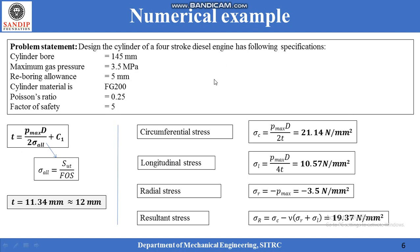Let us solve a numerical example to understand this concept. Design the cylinder of a four-stroke diesel engine with the following specifications — you may pause the video to go through the given data. The thickness can be calculated by the formula already discussed. Allowable stress is calculated as ultimate tensile strength divided by factor of safety. By substituting all the known values, thickness equals 11.34 mm, which is rounded off to 12 mm. Although the design thickness is obtained, it is important to calculate all stress values. Circumferential, longitudinal, radial, and resultant stresses are calculated and it is ensured that all these values are less than the allowable stress of the material, which is 200 divided by 5, equal to 40 MPa. Thus we can say that the design thickness of 12 mm is safe. In the next lecture we will see the design of the cylinder head.